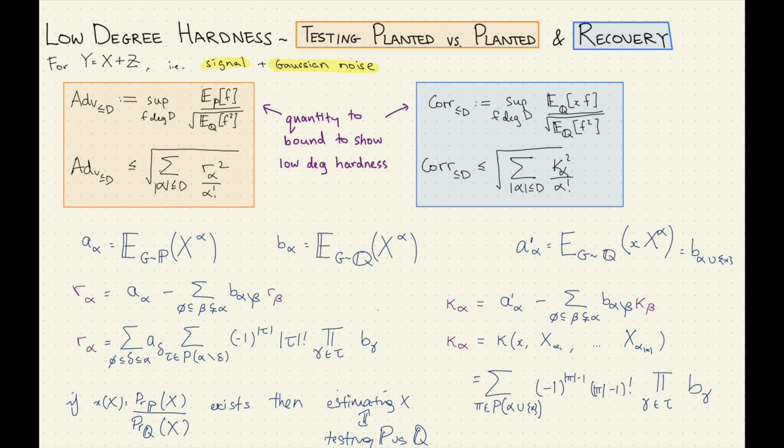To remind people what the definition of the cumulant is — one nice thing in the special case: when you're thinking about a recovery problem, the recovery distribution is this. Formally, if you have some function x which is just a function of the planted structure and it has this property, then these two things reduce to being the same. Here we get mostly the same terms in terms of the expectations of q over some x-alpha.